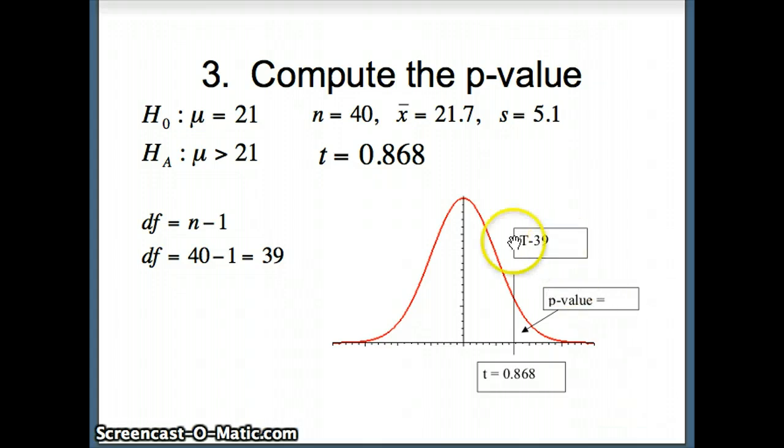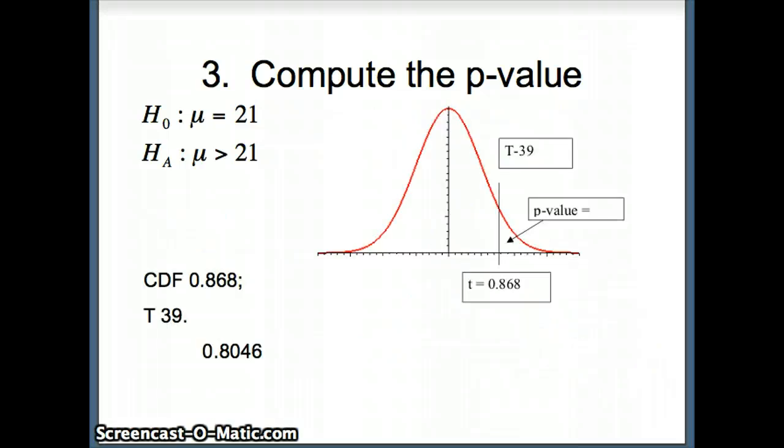T with 39, test statistic 0.868. To find our p-value, we need the area where the arrow is pointing. We ask the computer to do cdf 0.868 semicolon t 39, and Minitab comes back with 0.8046.